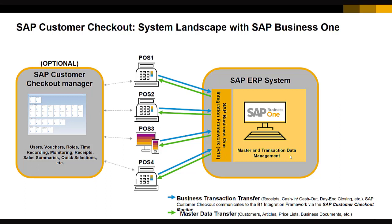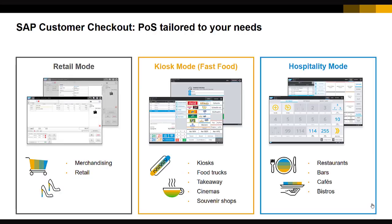SAP Customer Checkout Manager is also a central component, like SAP Business One. If you need central functions such as central parking, central voucher management, software updates, or central user management, you need the Manager. SAP Customer Checkout supports three different user interface modes: retail mode, kiosk mode, and hospitality mode. Each mode is optimized for its use case — retail mode uses scanners, kiosk mode is optimized for touch to execute sales very fast, and hospitality mode starts with a table and supports tip management.